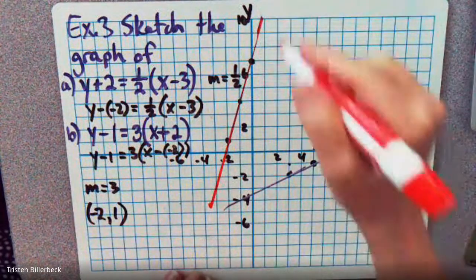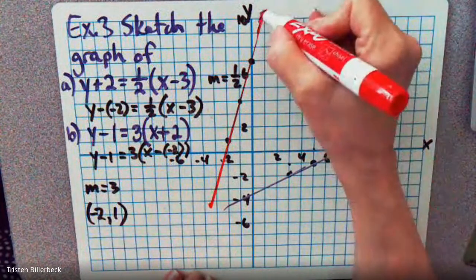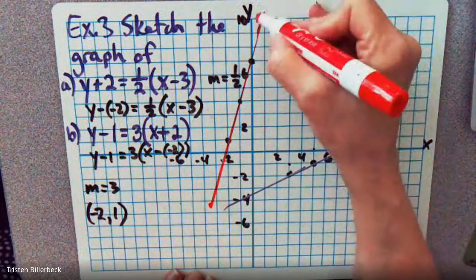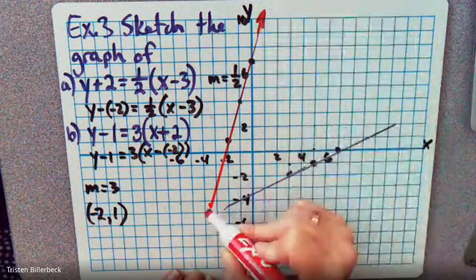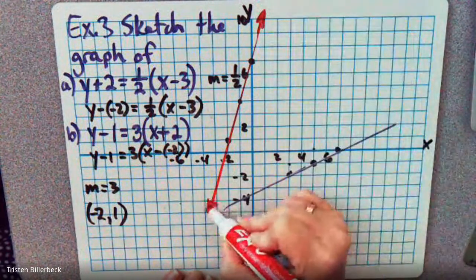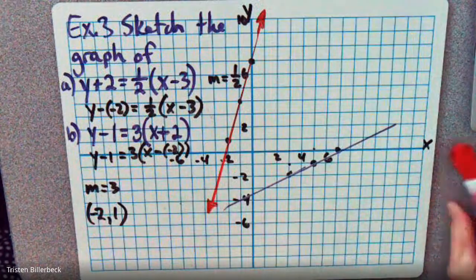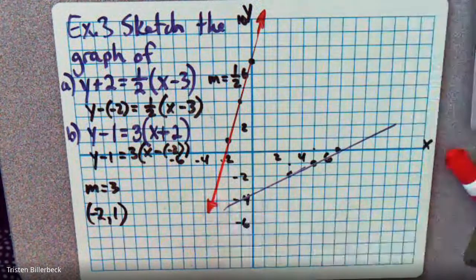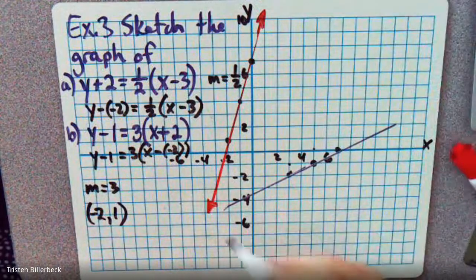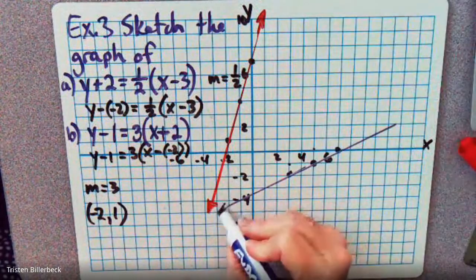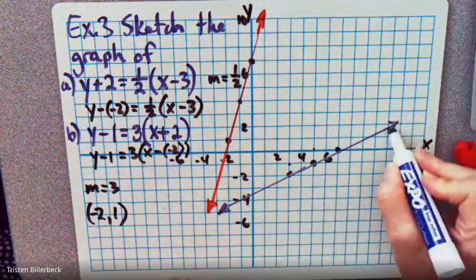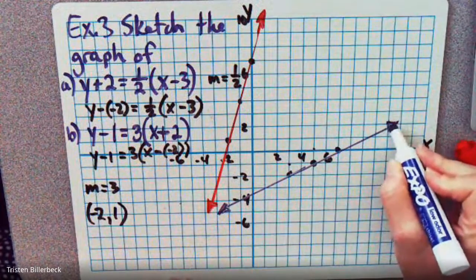And you can always remember to do your little arrows because the lines do go on forever. So there we have it — the two equations graphed.